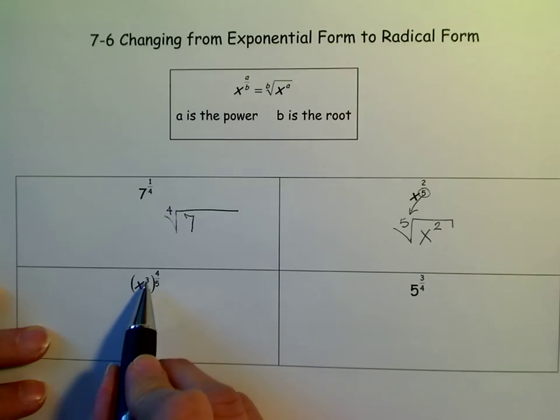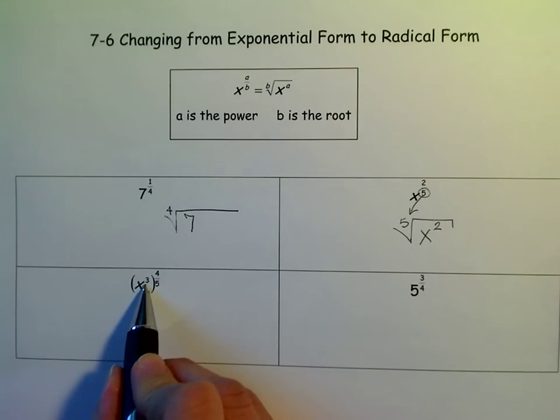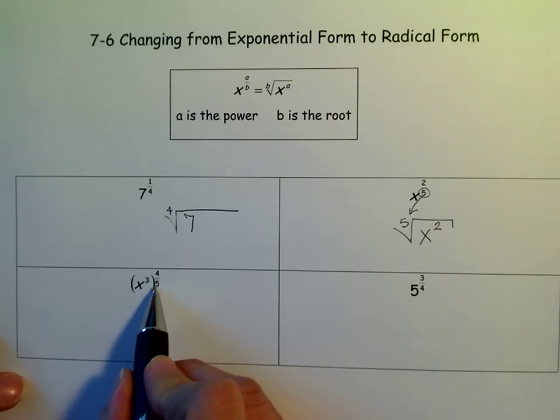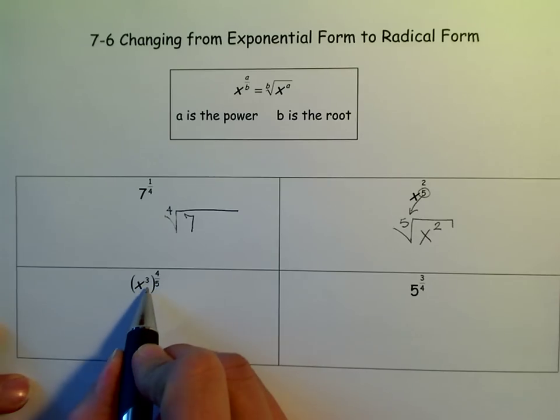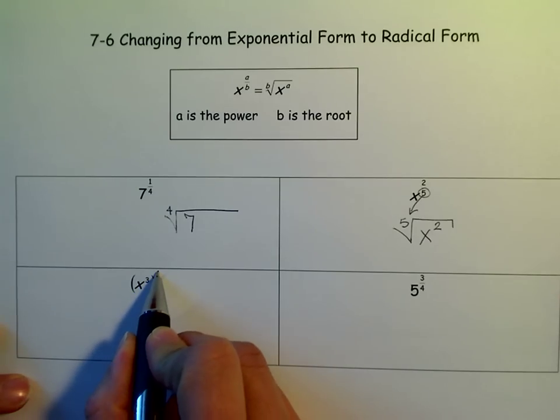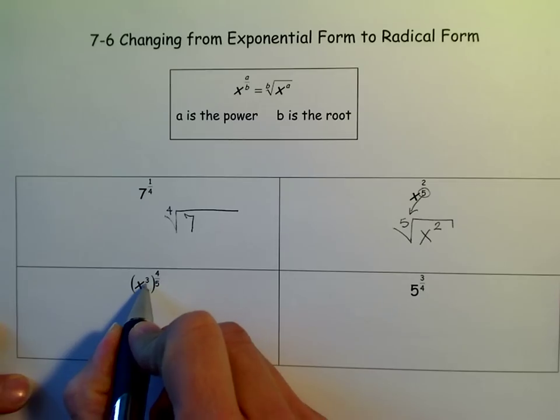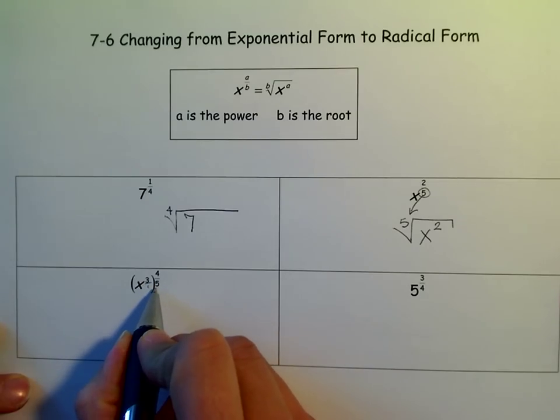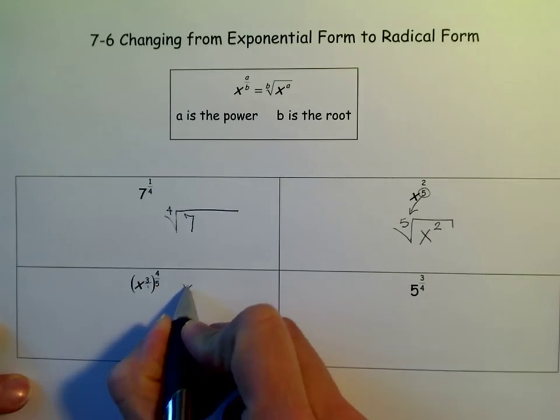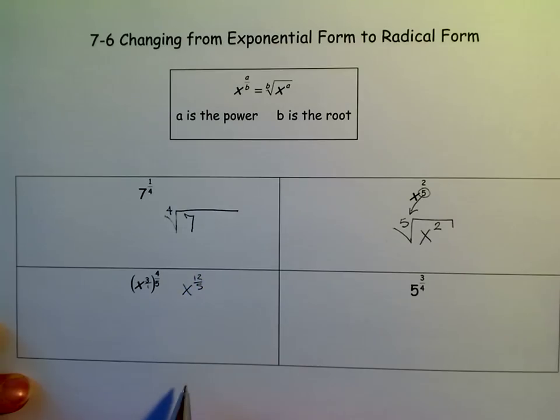And in this one, you'll notice that there's a 3, and then there's a to the 4 fifths. Well, we have to remember our rules. Our rules for powers of powers says to multiply. So we're going to multiply. 3 times 4 is 12. When you multiply it, remember it's top times top, bottom times bottom. So we really get x to the 12 fifths.